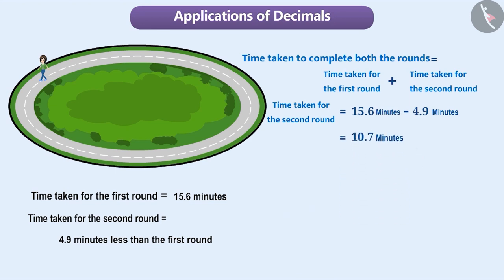Now, we will find out the total time taken by Manju to complete both rounds by adding these two times. To do so, we again write both decimal numbers one below the other so that the digits at the similar places fall in the same column. Then, we add them from the right side in the same way as we add whole numbers. And, in the result, we place the decimal point in the decimal column.